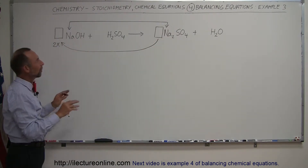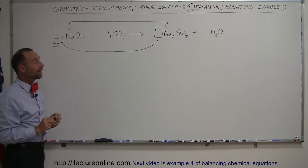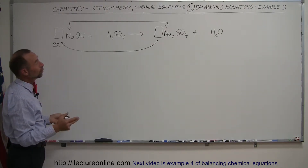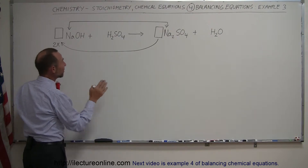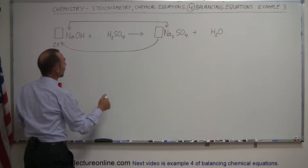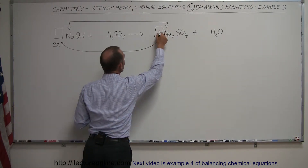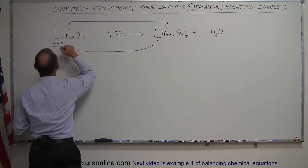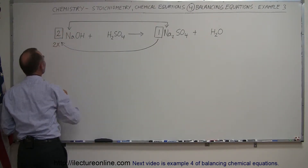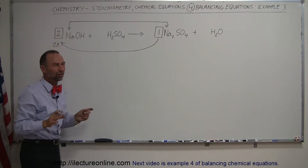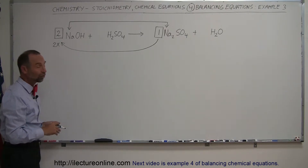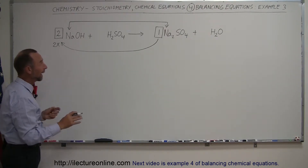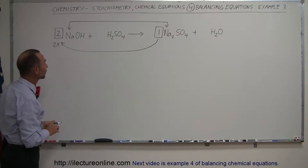So far we're not going to put any numbers in yet, but we could say: for this to be balanced, if we place a one in front of sodium sulfate — which may change — then we'll put a two in front of sodium hydroxide. That's a good start, though it may change as other things need to be balanced.